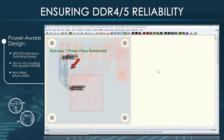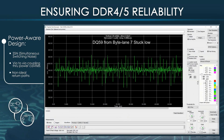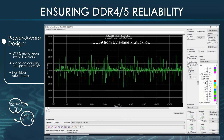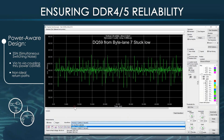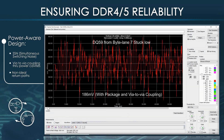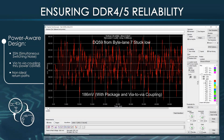Now let's compare the results with byte lane 7. The peak-to-peak noise on DQ59 with just package coupling is around 98 mV. With via-to-via coupling enabled, it increases to 186 mV. DQ59 has significantly more via-to-via coupled noise than DQ0 because DQ59's current return path is not ideal — it references power planes instead of ground planes, therefore injecting more noise into the power cavities.